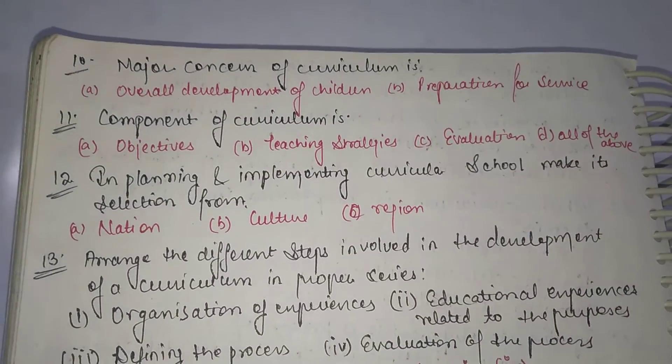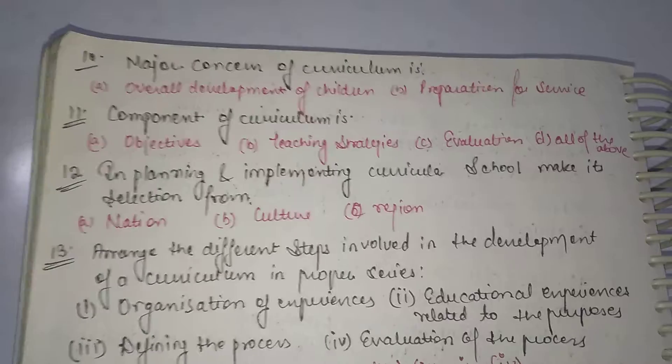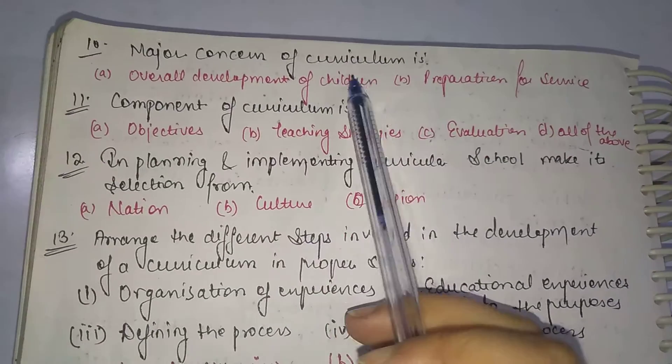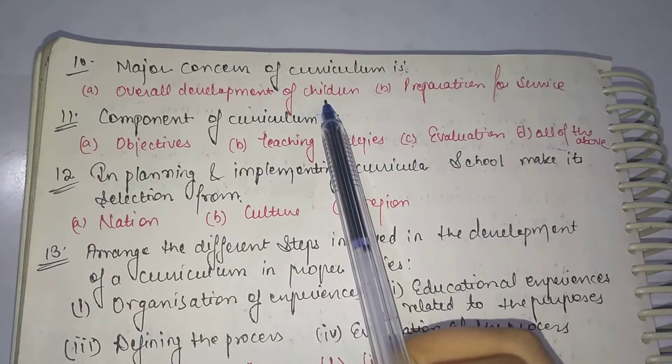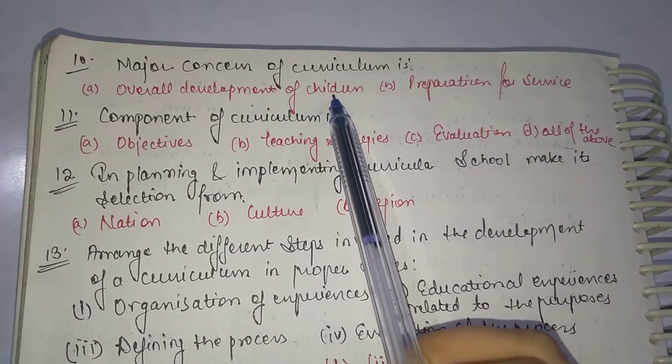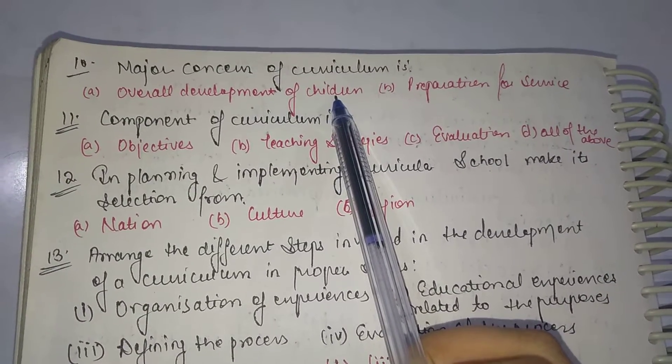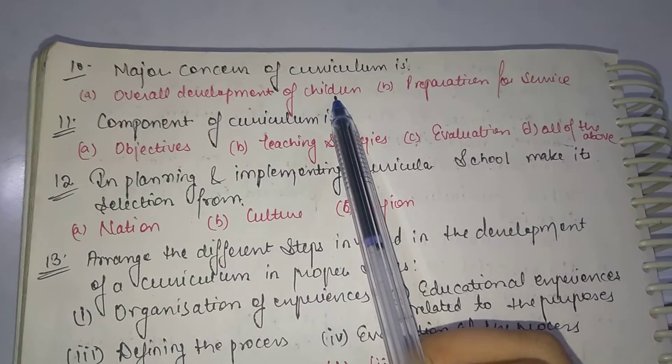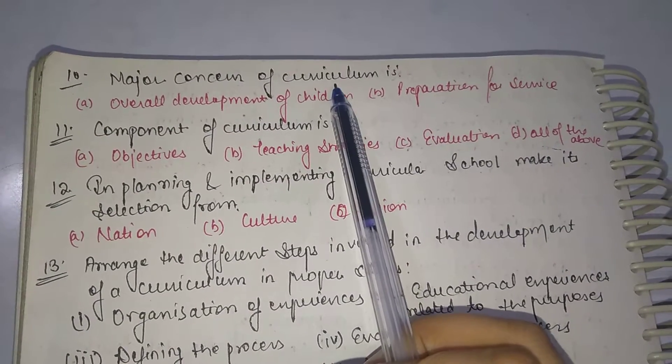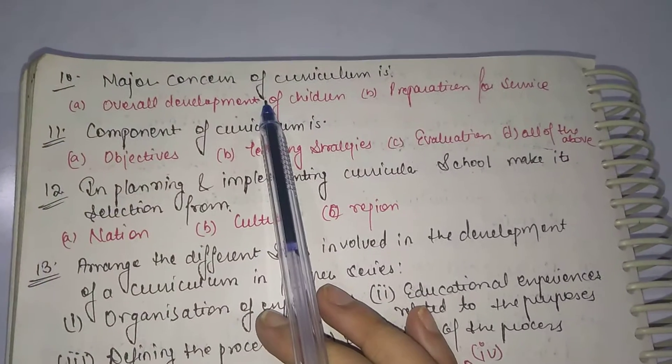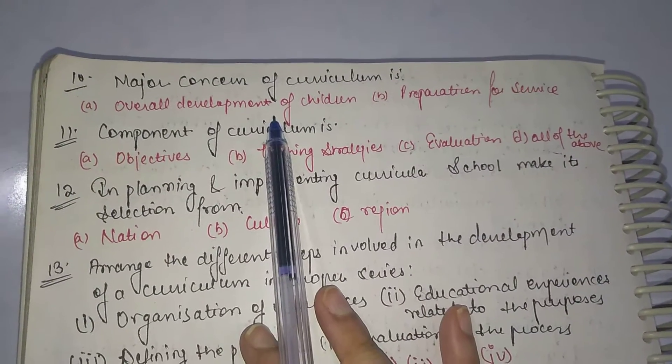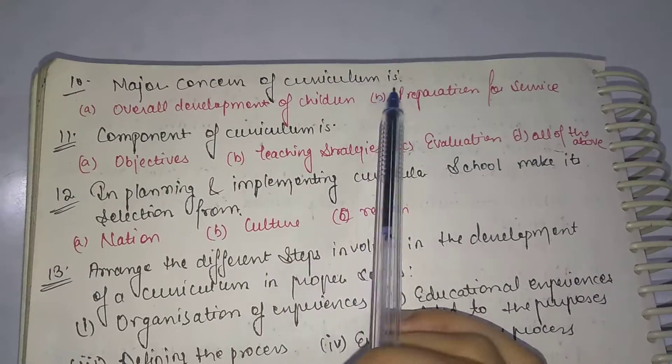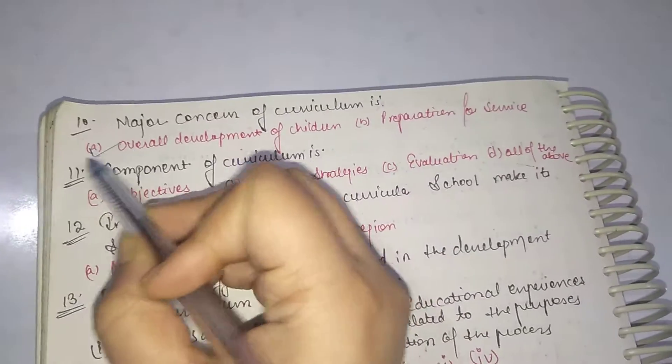The next question is: Major concern of curriculum is, or what we can say is major objective of curriculum is the overall development of children, whether it is intellectual, physical and social. Each and every development comes under the curriculum.